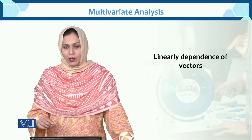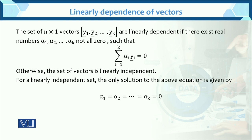So what is the linearly dependence of a vector? Here is the set of n×1 vectors — vector 1, 2, up to k. The set is linearly dependent if there exist real numbers alpha 1, alpha 2, up to alpha k, not all zero.